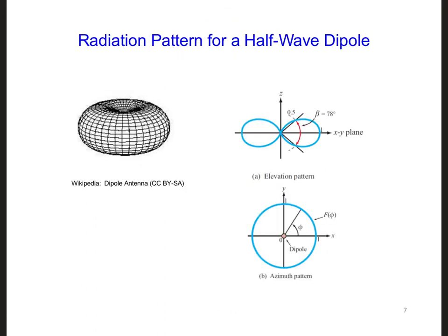Here is the radiation pattern of a half-wave dipole in free space. The radiation from the dipole is symmetrical around the dipole axis. Here's the dipole axis. So this would be the z-direction.